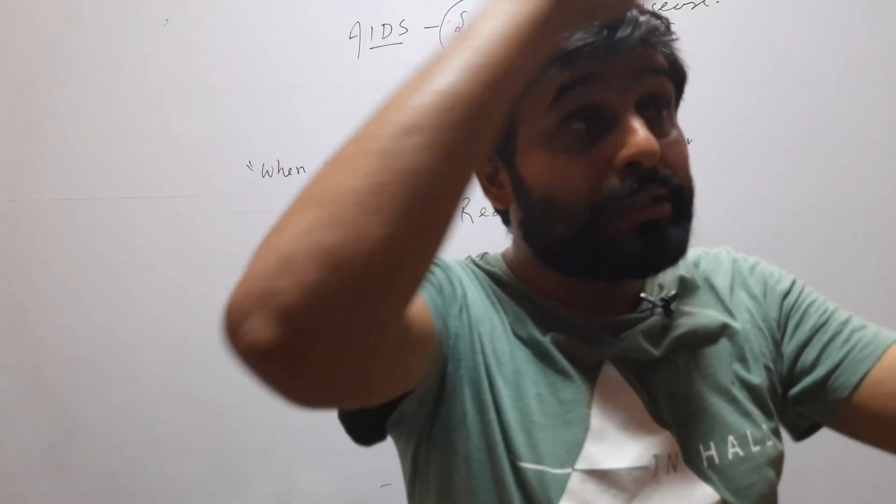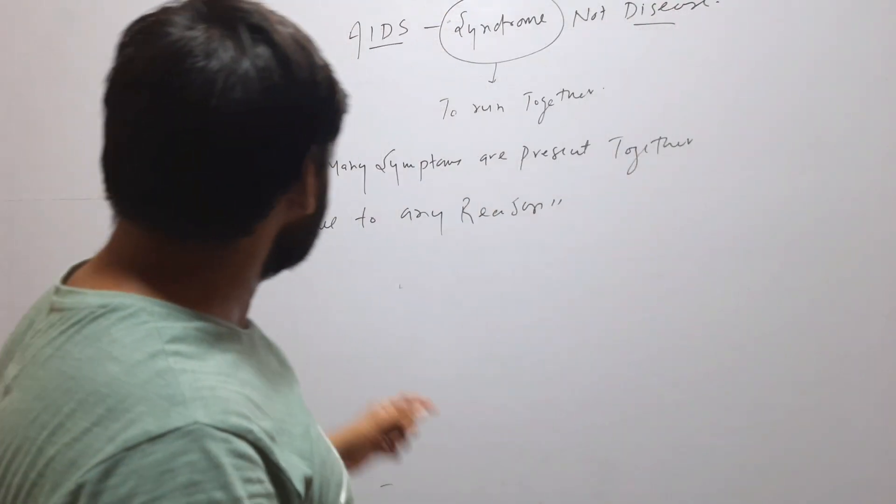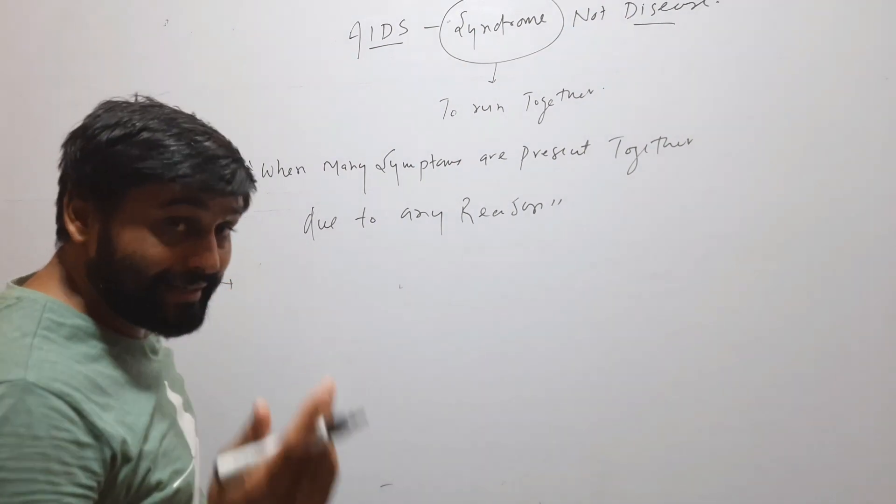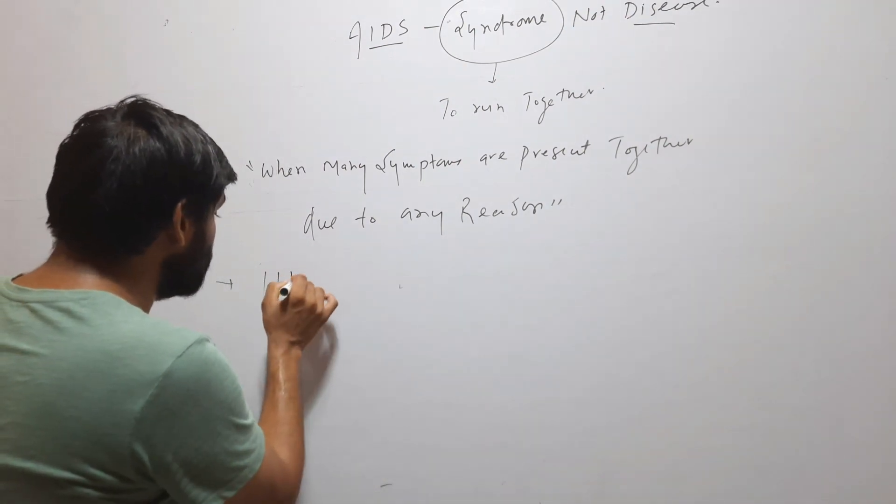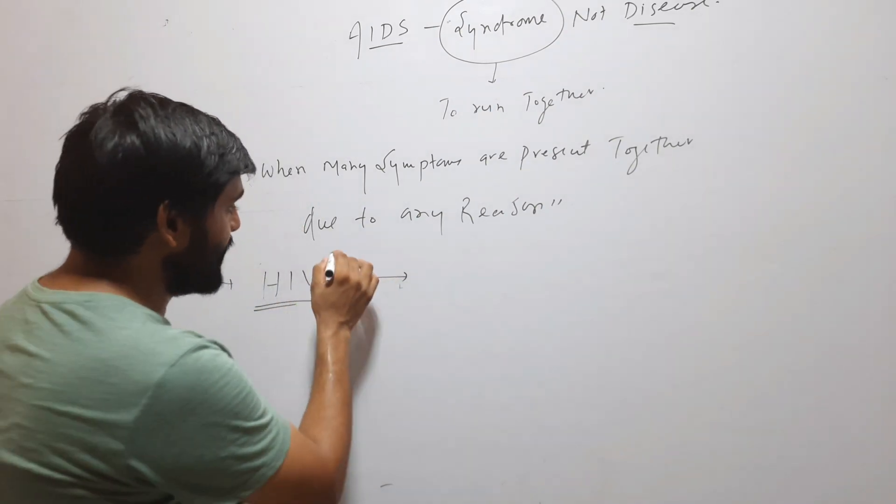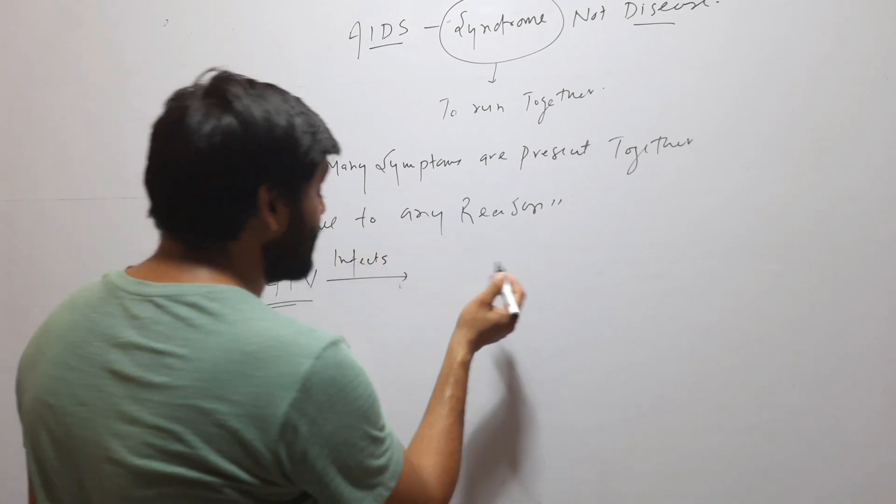So this is syndrome. Now coming to AIDS, we know that AIDS is caused by human immunodeficiency virus. What does it do when it infects the human body? It breaks down immunity.